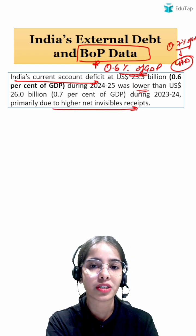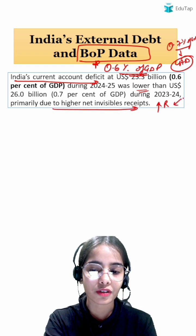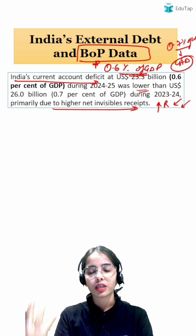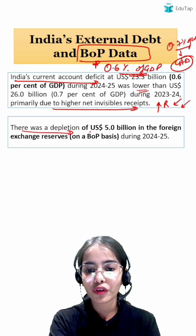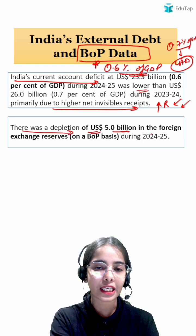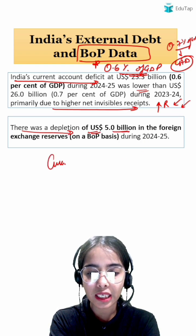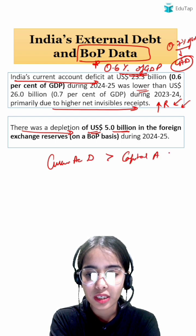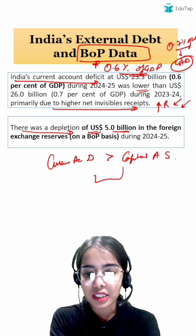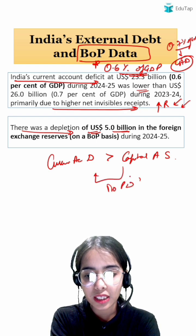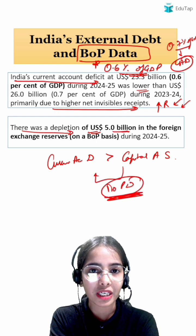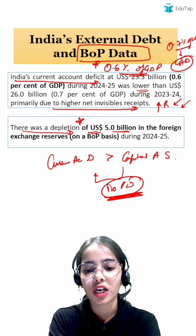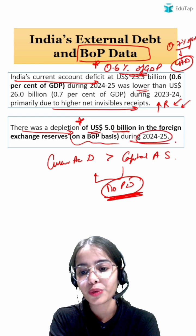This decline was primarily due to higher net invisible receipts, driven by higher receipts from service exports and remittances. The current account deficit was higher than the capital account surplus, resulting in a balance of payment deficit. To cover this, there was a depletion of US dollar 5 billion in foreign exchange reserves on a balance of payment basis during 2024-25.